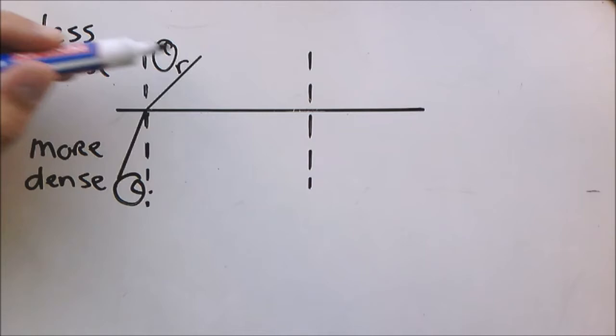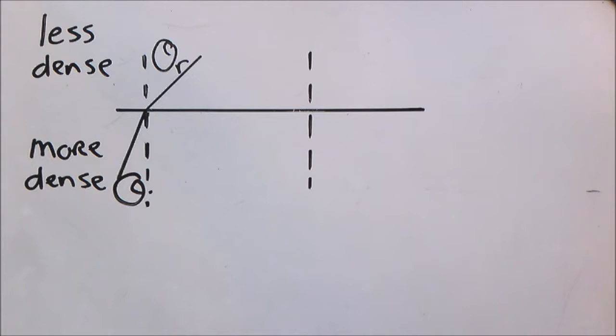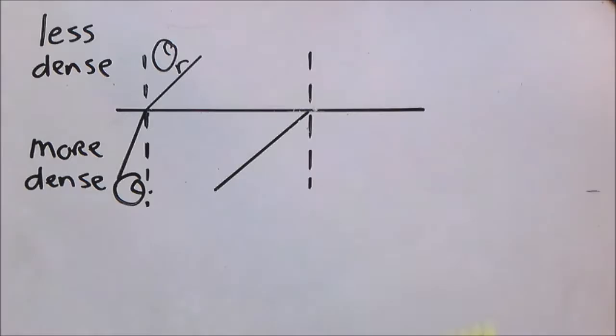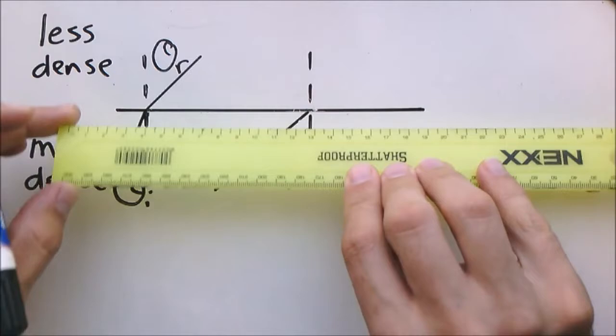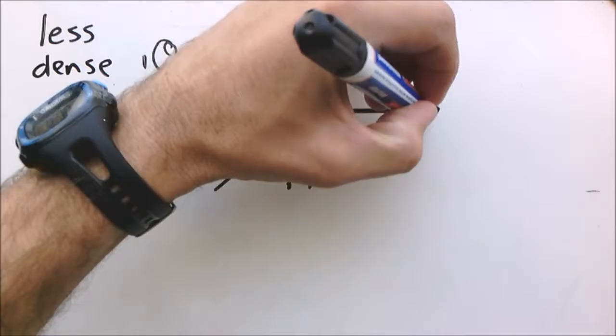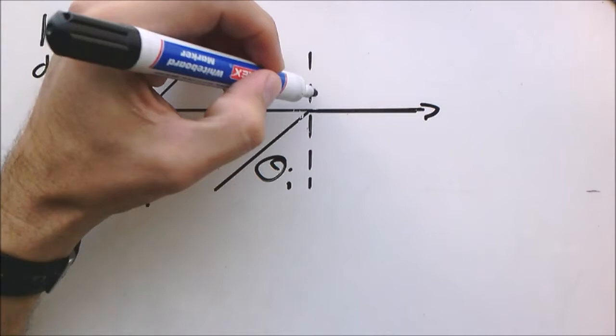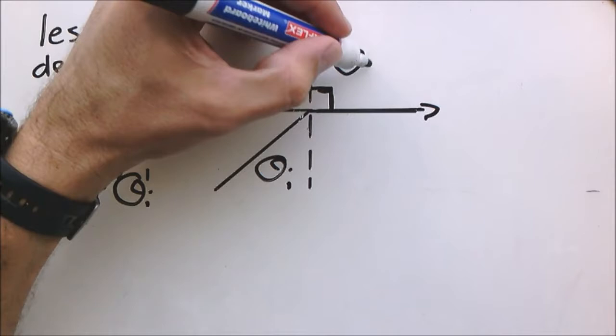Now let's look at the second scenario — same setup, less dense above, more dense below. This light beam approaches the boundary at a bigger incident angle, to such an extent that the refracted ray is parallel with the boundary. In other words, the angle of refraction is a right angle — a 90 degree angle.